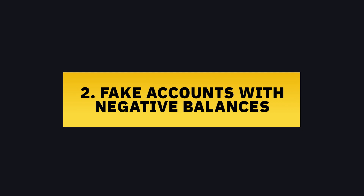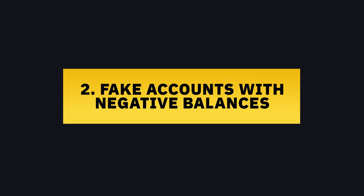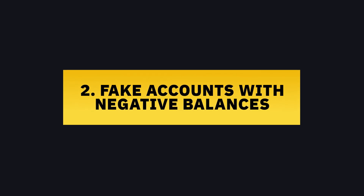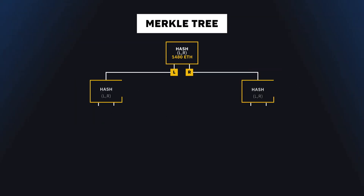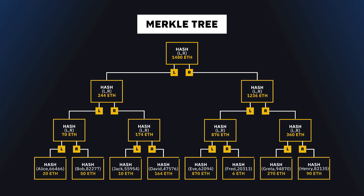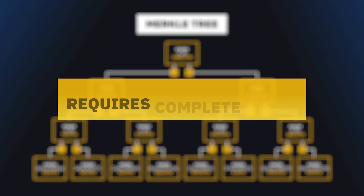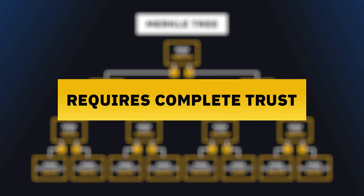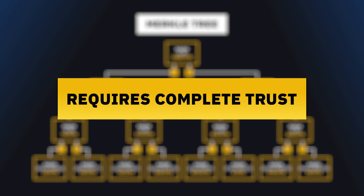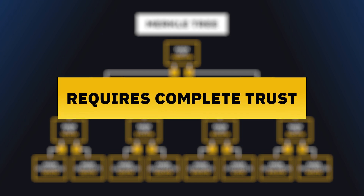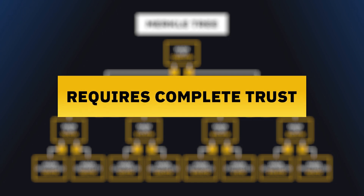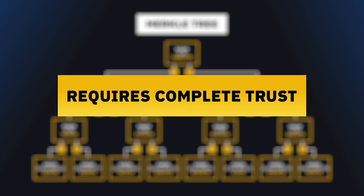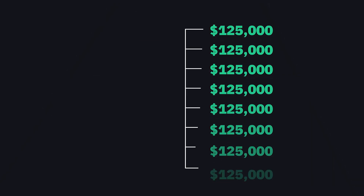Number two: fake accounts with negative balances. It's another issue with a standard Merkle tree for proof of reserves, as it requires you to completely trust the centralized exchange itself. A centralized exchange could conceivably create a user with a negative balance to reduce the total amount reflected in the reserves.